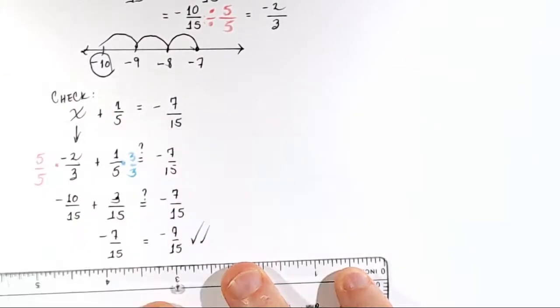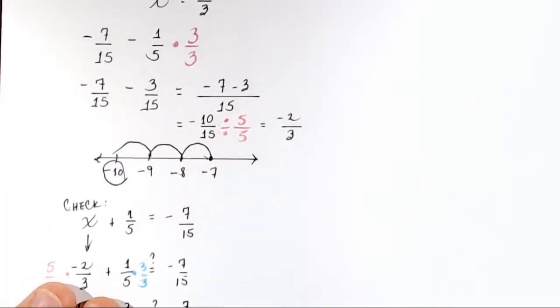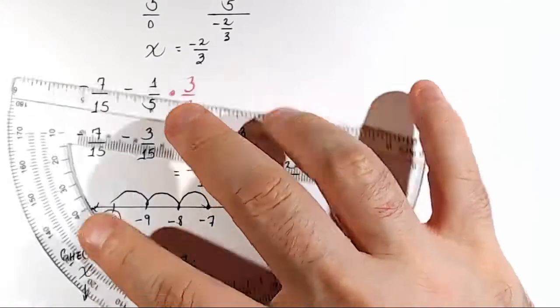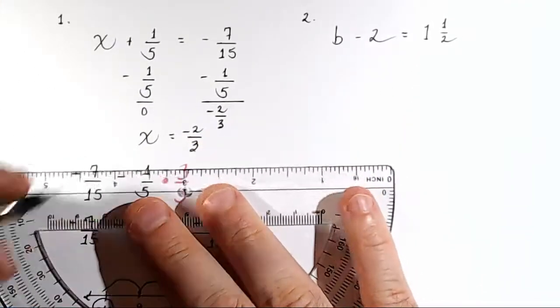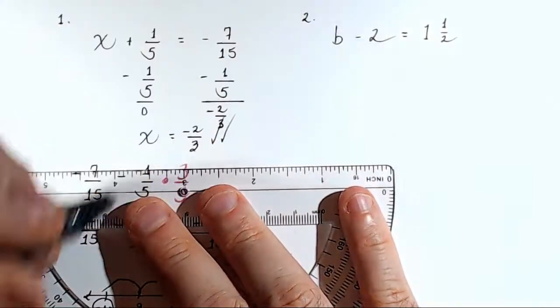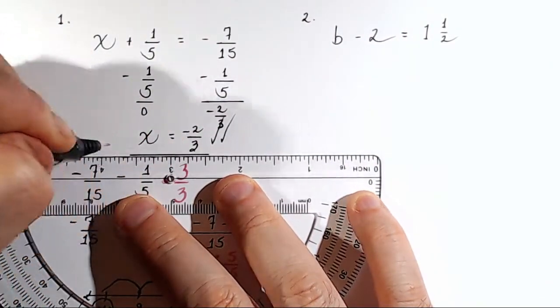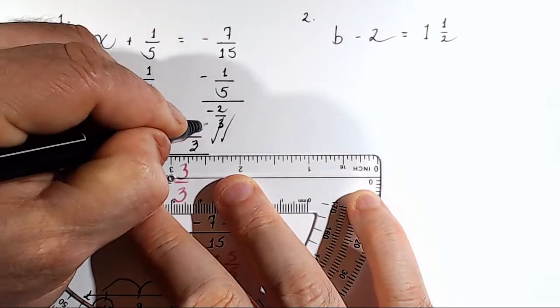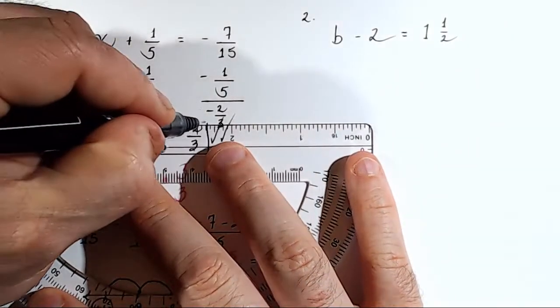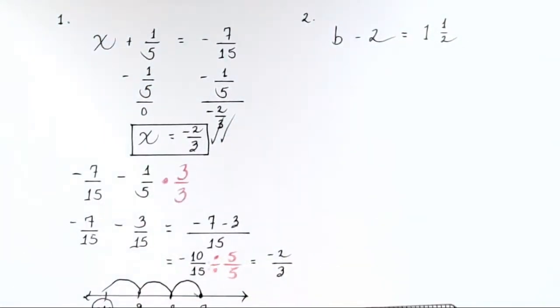Therefore, that's our double check right there. And going back to our answer, which was negative 2 thirds for x, we double checked it. So put a double check mark. Put this in a box.